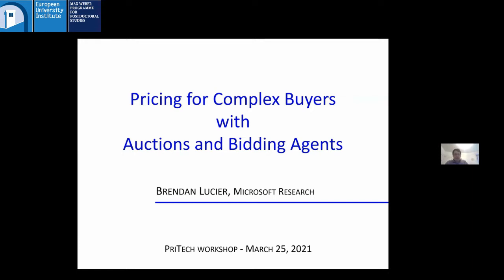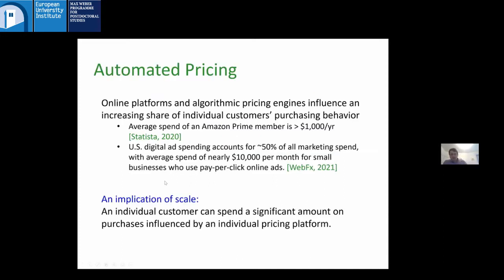The thing I'm going to focus on is robustness to complexity in buyer preferences and behavior, with an emphasis on complex preferences around spending money. As a high-level motivation: the impact of increases in scale of automated platforms. This complexity around spending money becomes more relevant as automated pricing systems become a larger part of an individual buyer's life — for example, through Amazon.